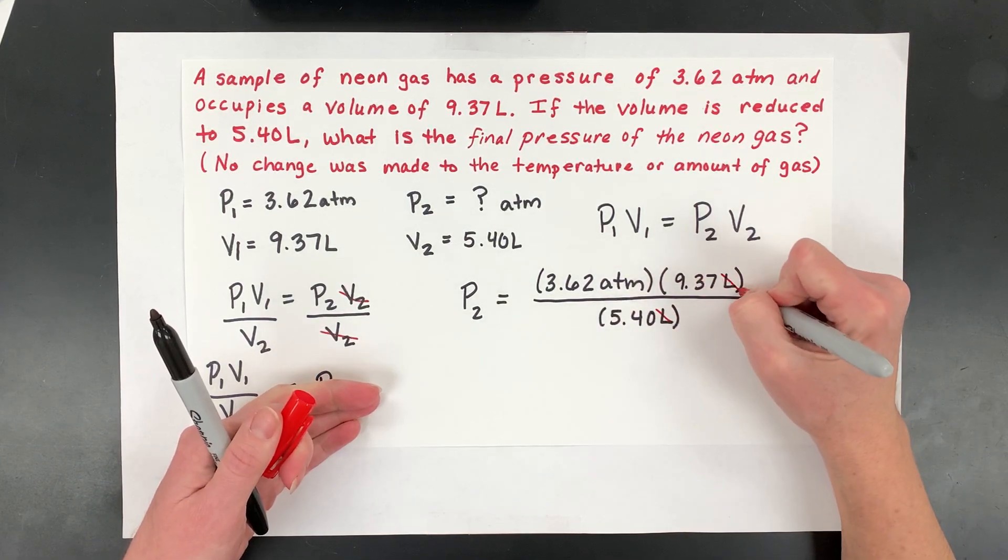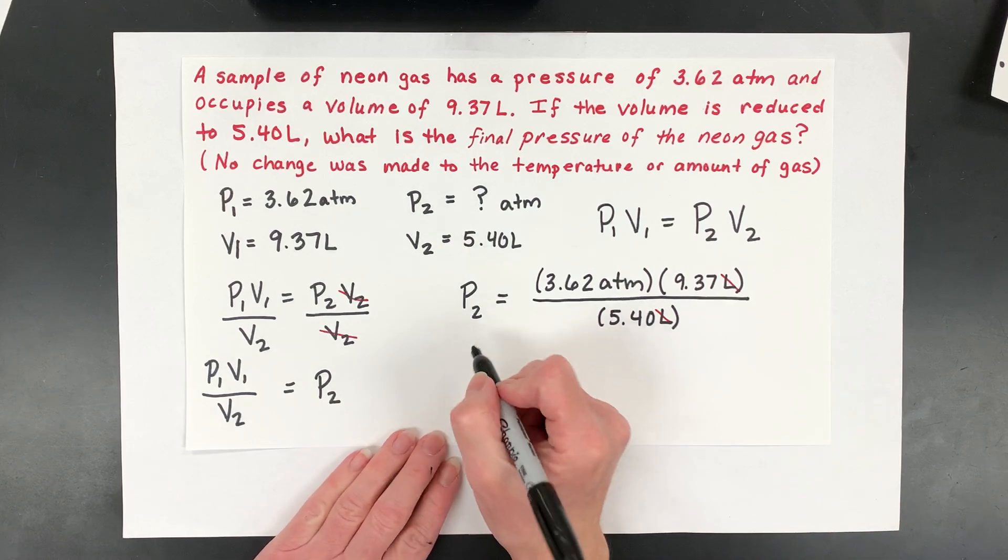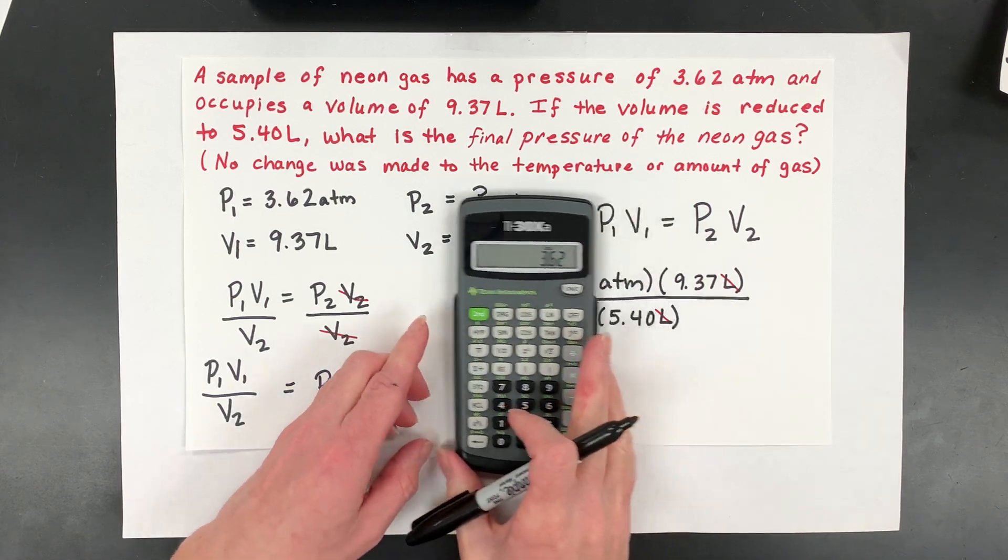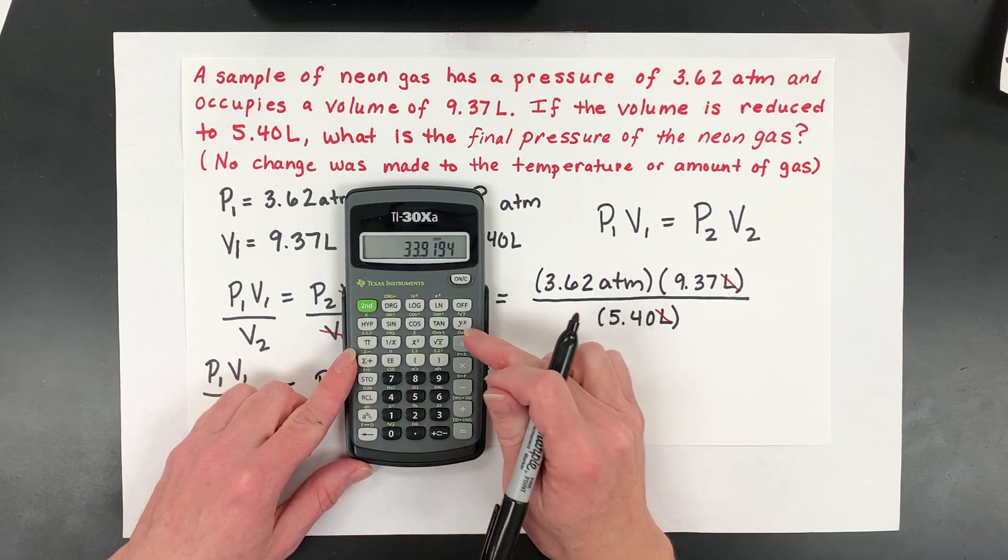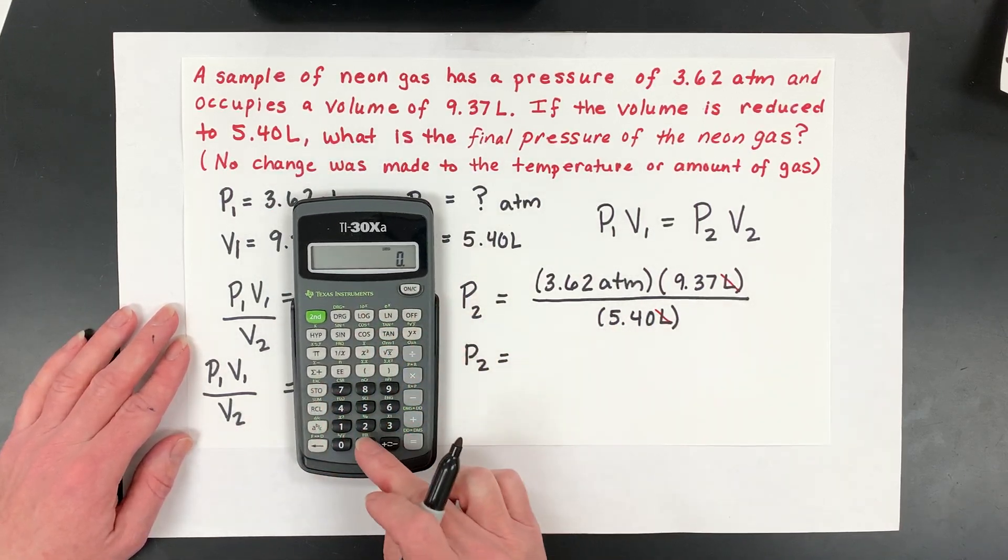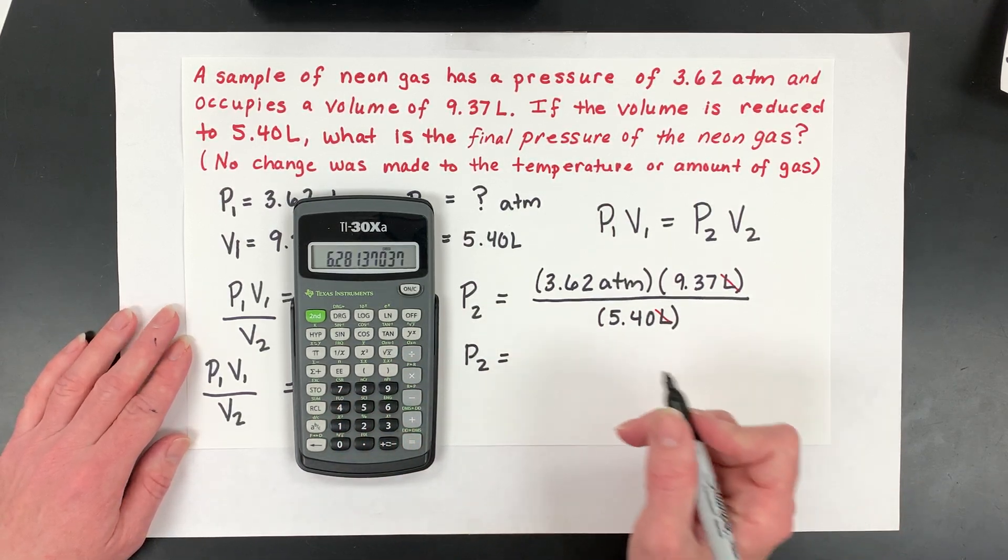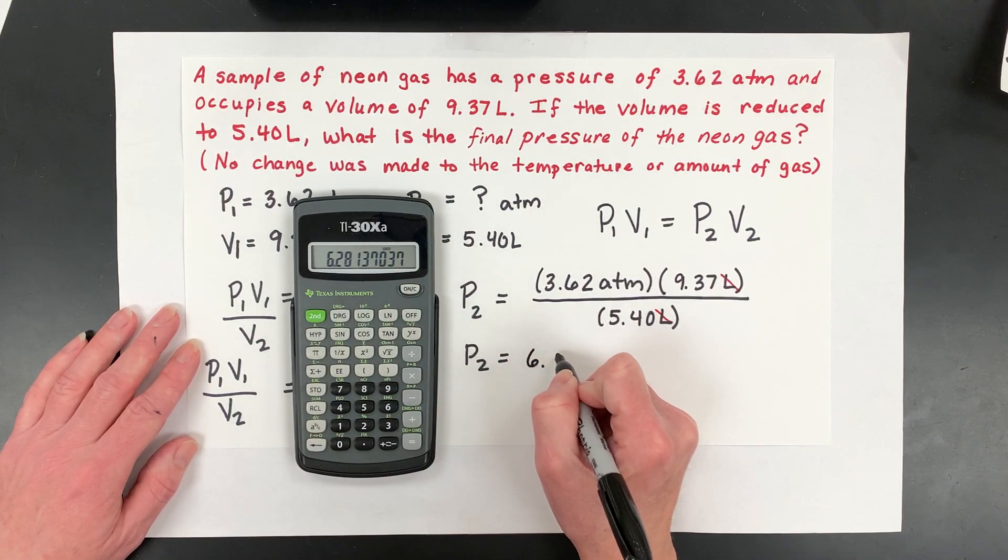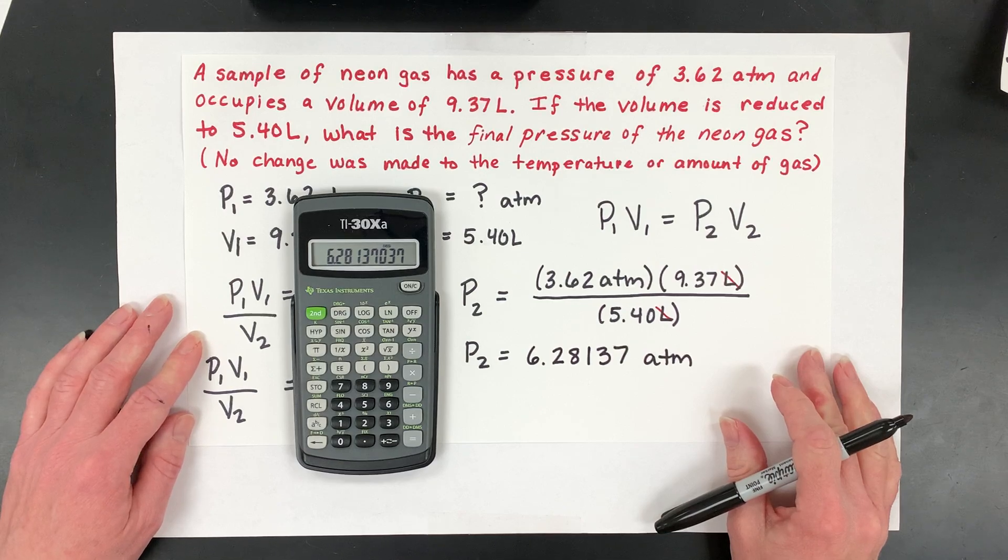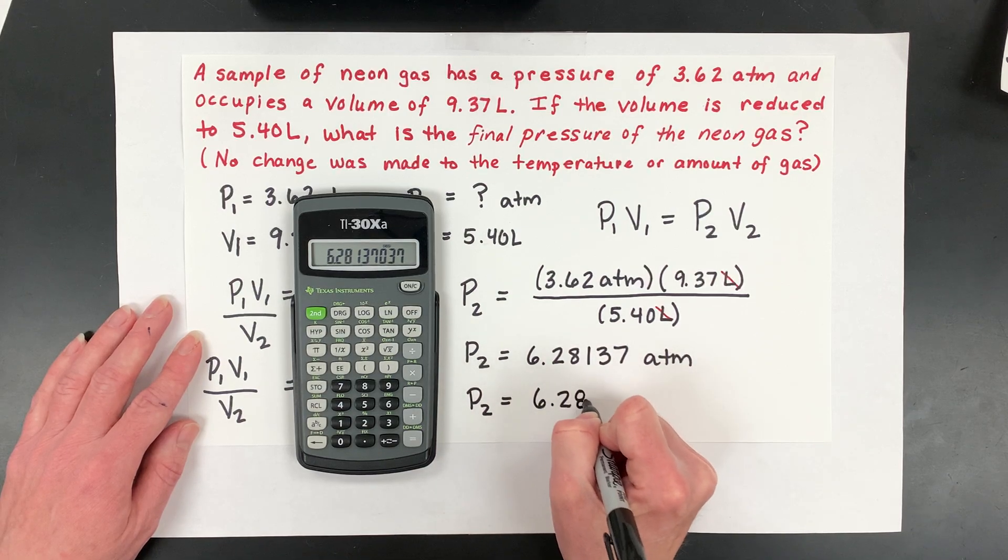So if you kind of look here, remember, we predicted using kind of that graph, think about that graph, we made the volume go down, so the pressure should go up. So our final answer, I'm just going to show you on the calculator with you here. So you'll take your 3.62, you'll multiply it by your 9.37, and then you'll divide that by your 5.40, and you get 6.28. So for my significant figures, I'm going to just keep 3, because all of these have 3 significant figures, so my P2 is going to be just 6.28 atm.